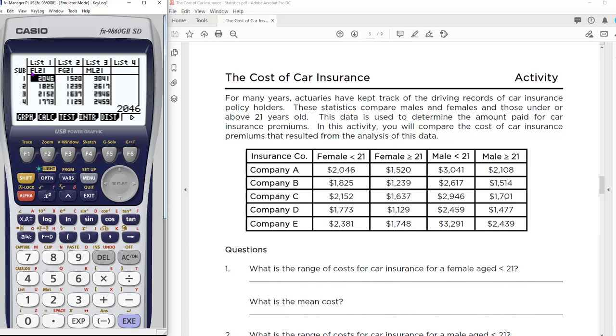This is females less than 21, females greater than 21, and males less than 21. Now I want to show you what I did. When you first open a list, all the lists are empty. I'm going to arrow over to this last list, which is males greater than 21.